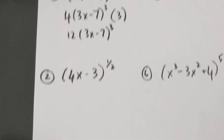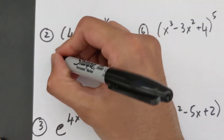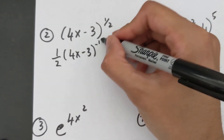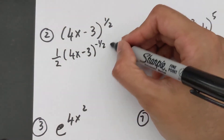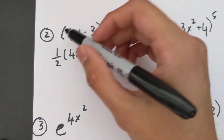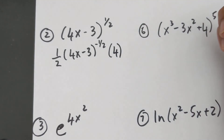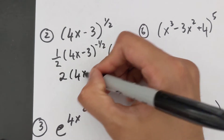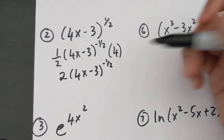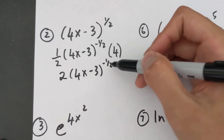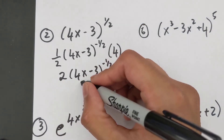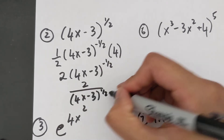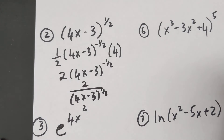For the next one, bring the half down, write the inside exactly the same, subtract one from the exponent — that's negative half — then multiply by the derivative of the inside, which is four. Four times one-half is two. We're not allowed a negative exponent in the final solution, so this simplifies to 2 over (4x − 3) to the power of positive half.